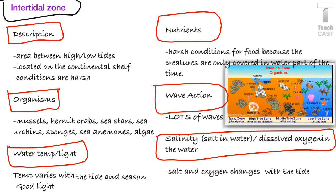Our first zone is called the intertidal zone. It's the area between high and low tides, located on the continental shelf. It's very harsh because you've got waves coming in and out. Water temperature and light vary depending on what tide is in and what the season is, but it does get good light. The creatures are only covered in water part of the time, so nutrients are sometimes hard to come by. There are lots of waves, and salt and oxygen levels change with the tides.